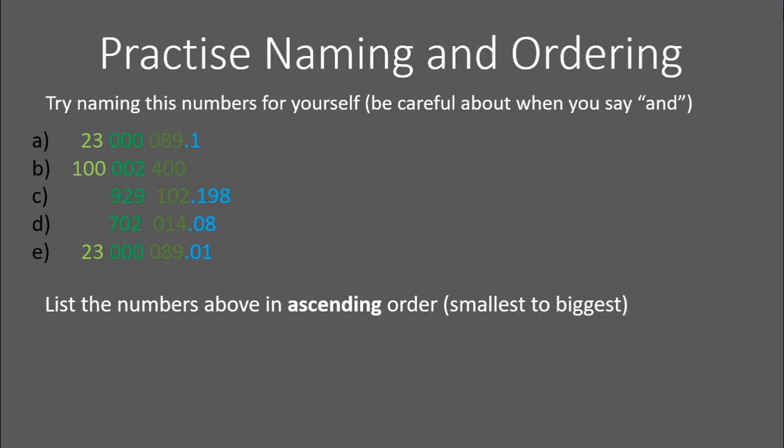Let's do some practice for yourself now. You're going to name these numbers and be very careful when you say 'and'. I've color coded them and spaced them out nicely. Remember, on a test if it's not nicely spaced out, you might want to rewrite it. Then you want to list the numbers in ascending order. Ascending means going upwards, so from smallest to biggest. Go ahead and hit pause and give that a go for yourself.